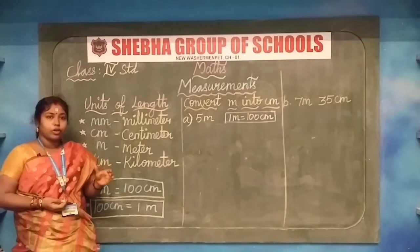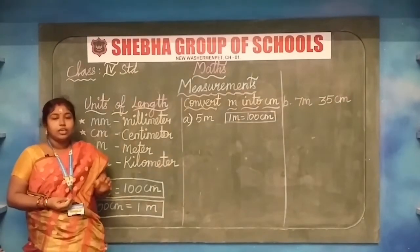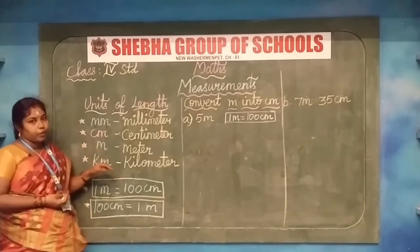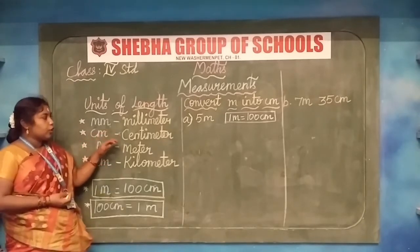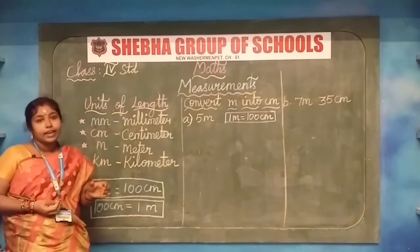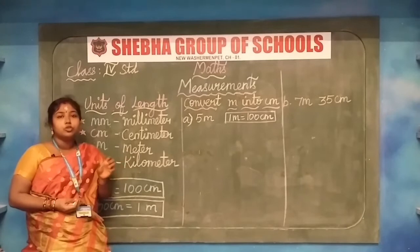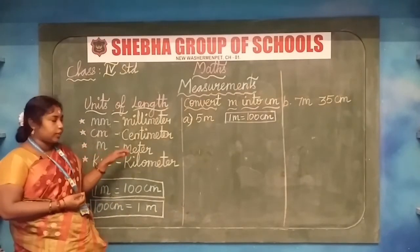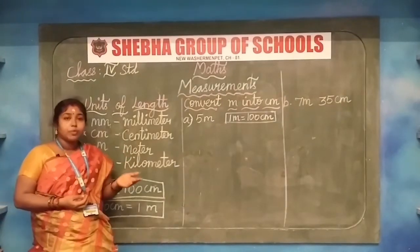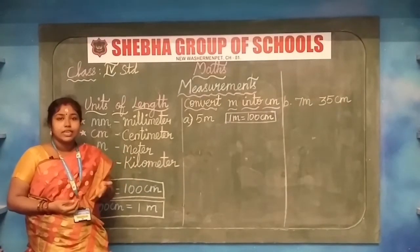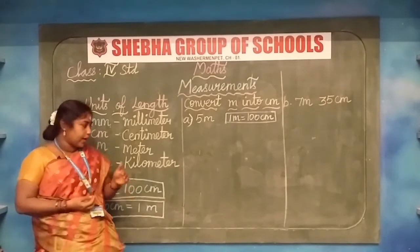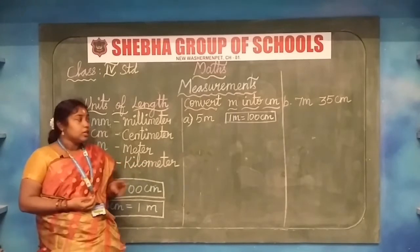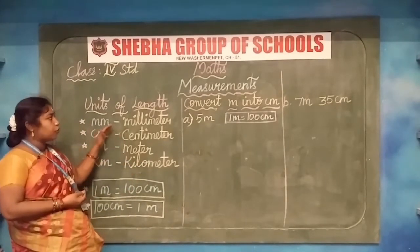There are some units used to measure the length. For example: millimeter, centimeter, meter, and kilometer. Millimeter is used to measure something like an eraser. Centimeter can be used to measure a toy car or toy items. For meter, if we are participating in a sport event, we can say I participated in a 100 meter race. Kilometer is used to calculate the distance between two places. These are the standard units used for length.